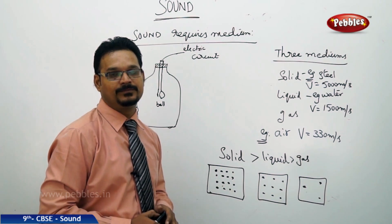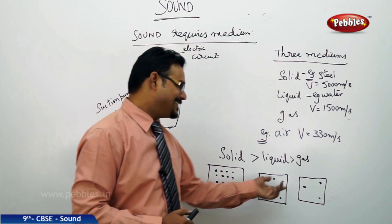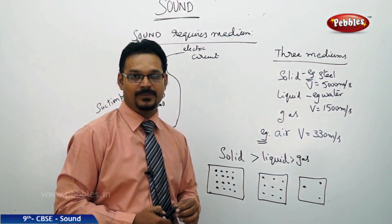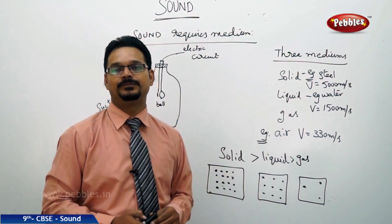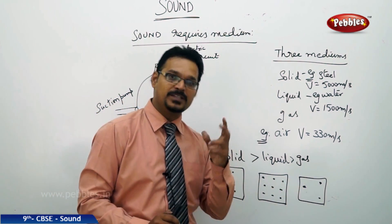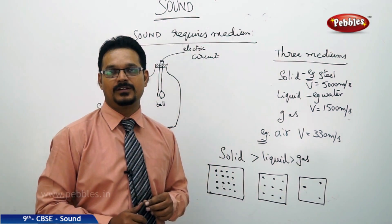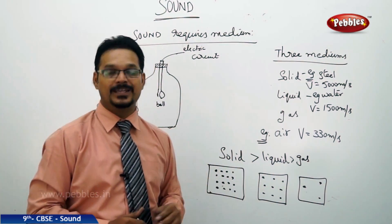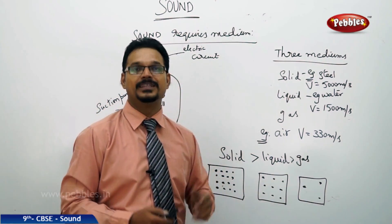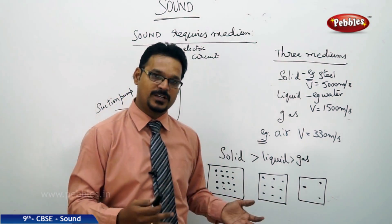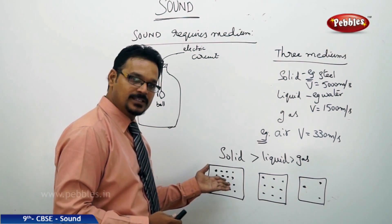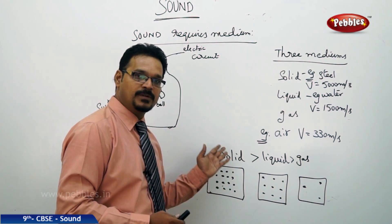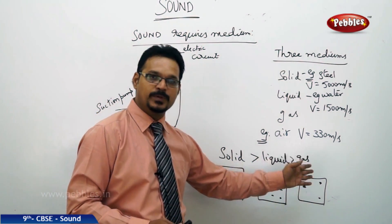That is why the speed of sound is greatest in solids. To increase the speed of sound in gas, you need to increase the temperature — when temperature increases, the particles start vibrating very fast, so sound travels faster. In general, the order is: speed of sound is greatest in solids, then liquids, then gases.